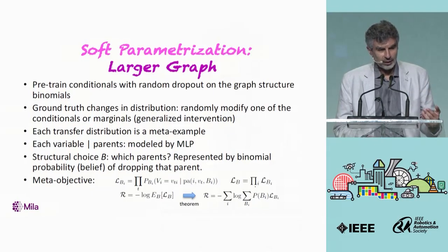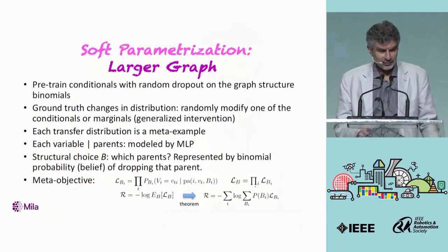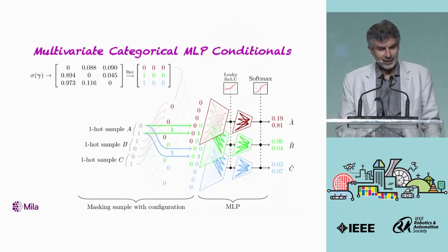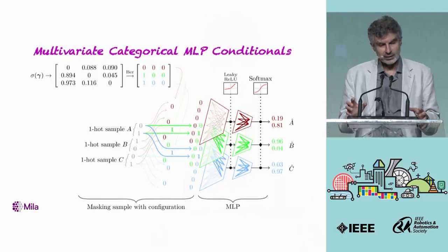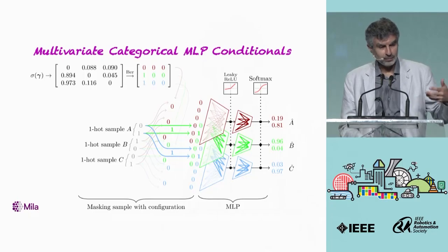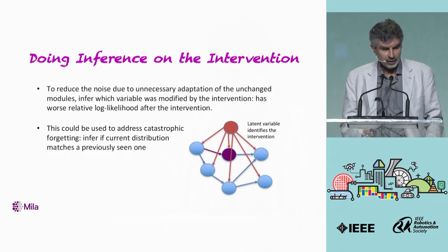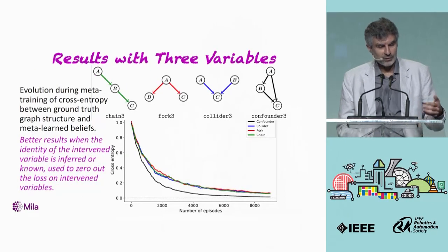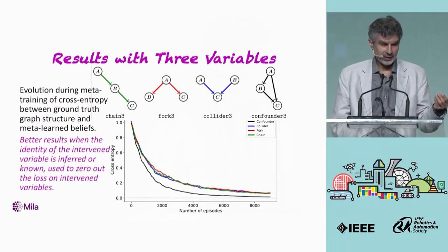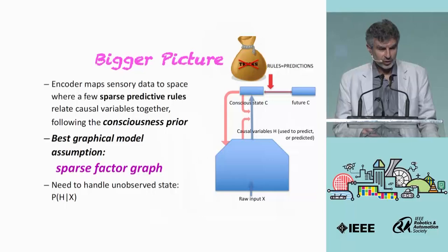We also have ongoing work, hopefully to be submitted to NeurIPS, on extending this to larger graphs. One idea is to have MLPs capturing each conditional, where binary masks control which other variables are used as input — those binary variables sampled from our belief distribution controlling which edges of the graph should be present. We've run experiments with three variables, which is interesting for causality because it includes dealing with confounders and colliders, and also with larger graphs.